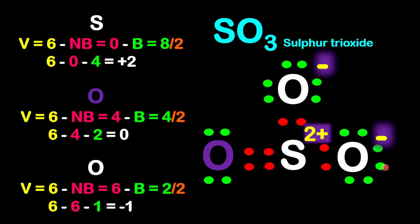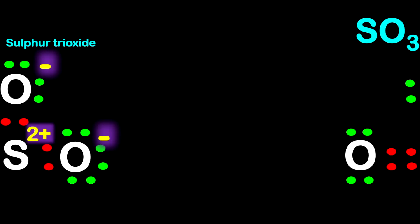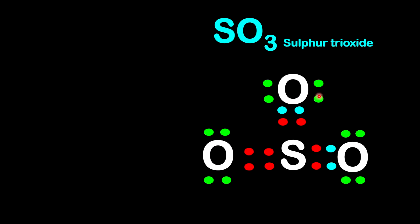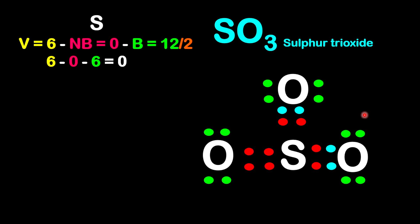If we draw the structure and shift around the double bond — shift a single bond from the oxygen to make a double bond between the oxygen and the sulfur — the structure will become more stable. Now let's look at the formal charge on each atom. For sulfur, sulfur is from group 6. We have 0 non-bonding electrons. The bonding electrons now is 12, so 12 divided by 2. So 6 minus 0 minus 6 gives 0. Now sulfur becomes a 0 charge.